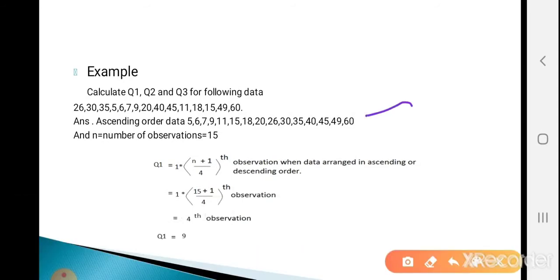The ascending order data is: 5, 6, 7, 9, 11, 15, 18, 20, 26, 30, 35, 40, 45, 49, and 60. Here n, the number of observations, is 15.